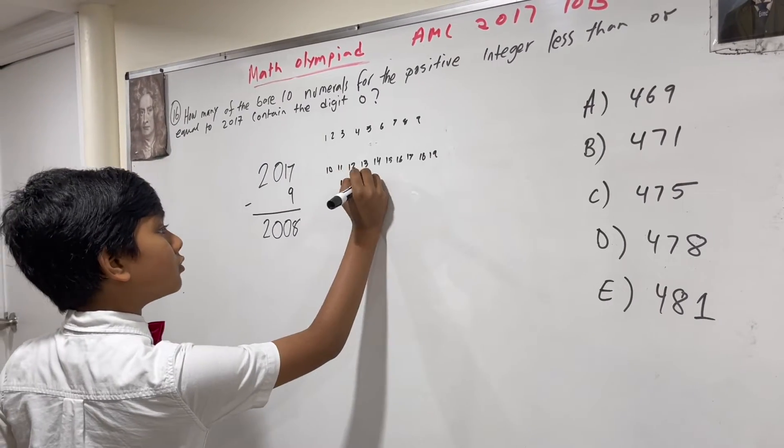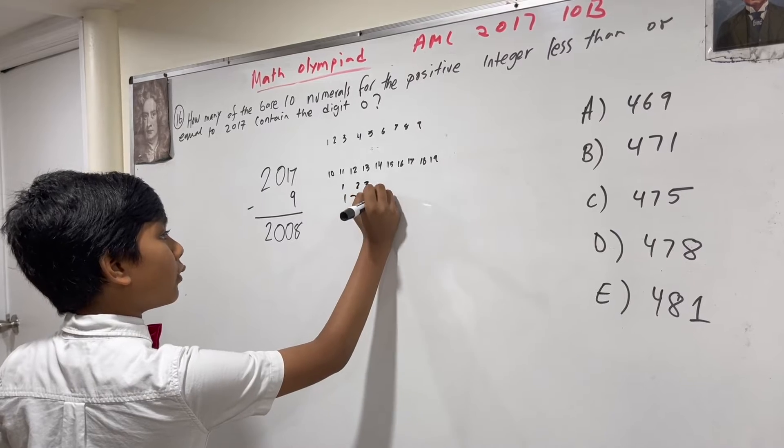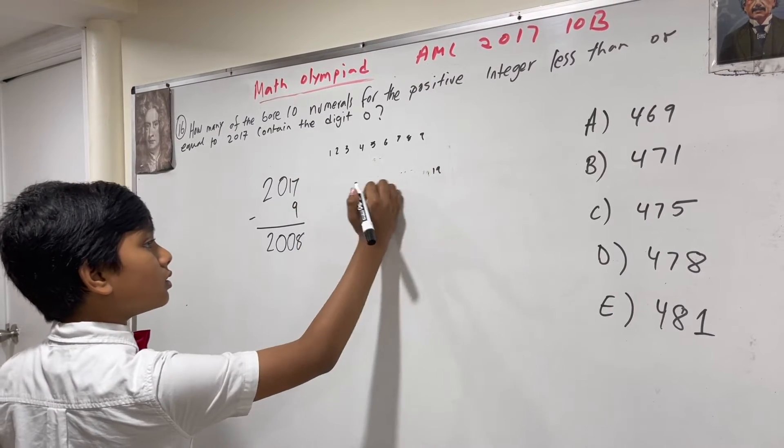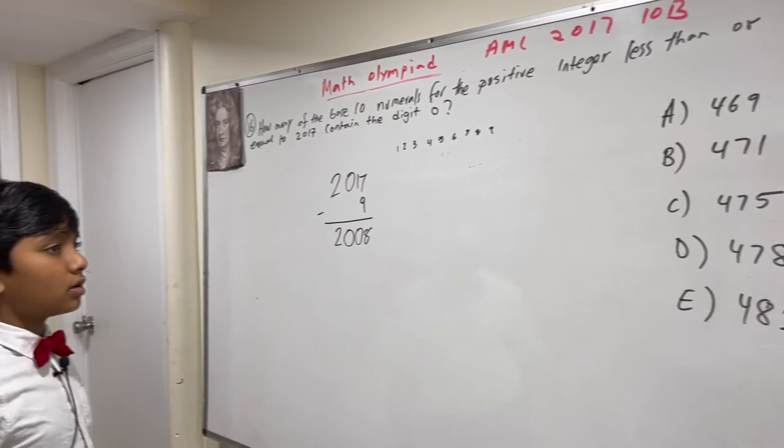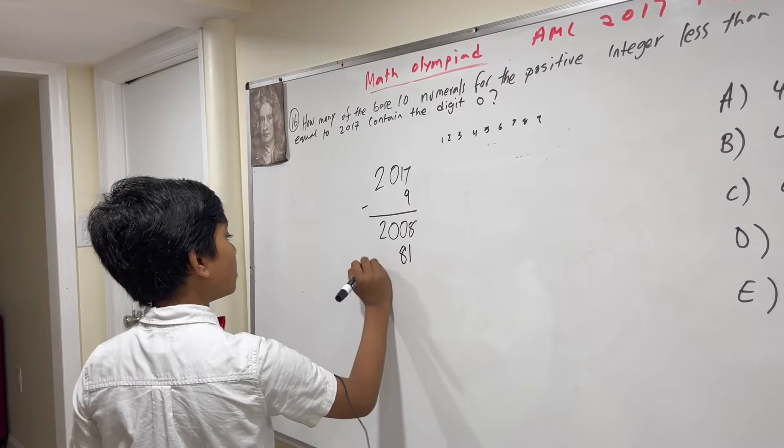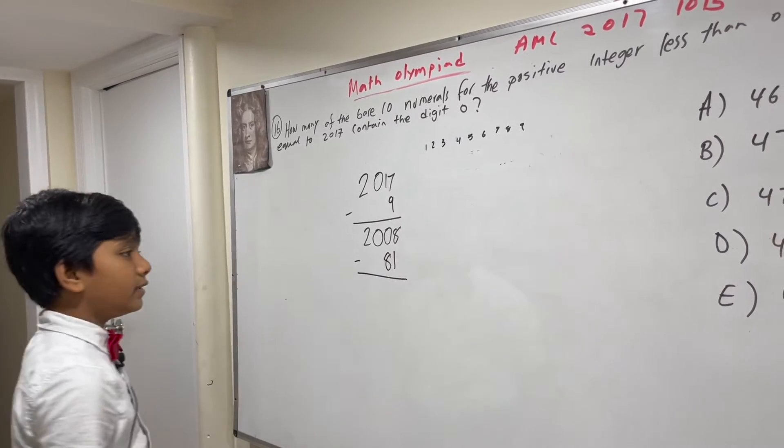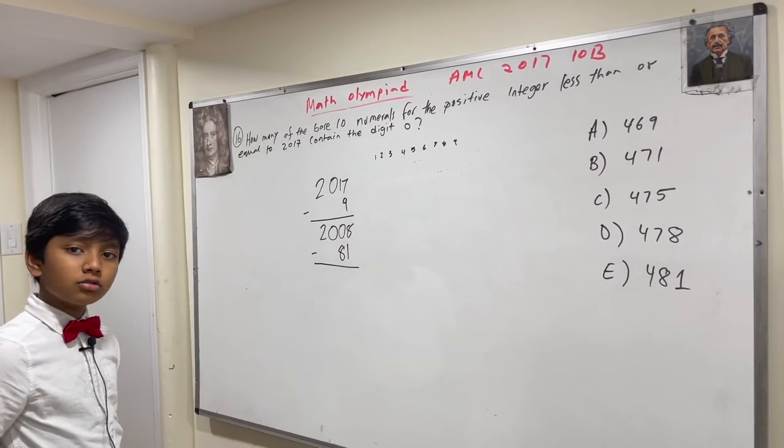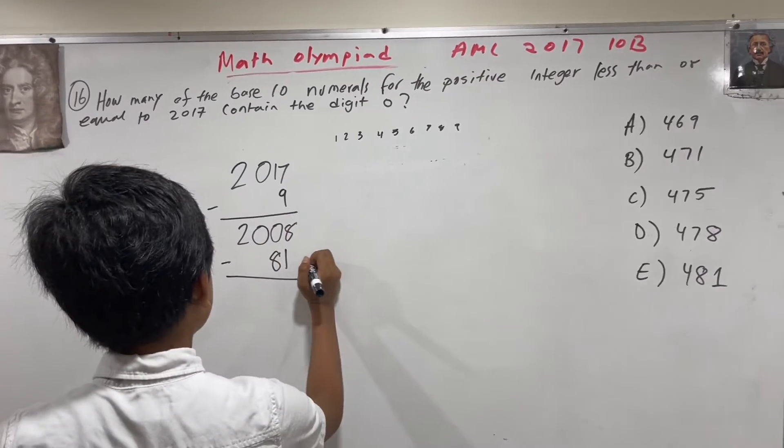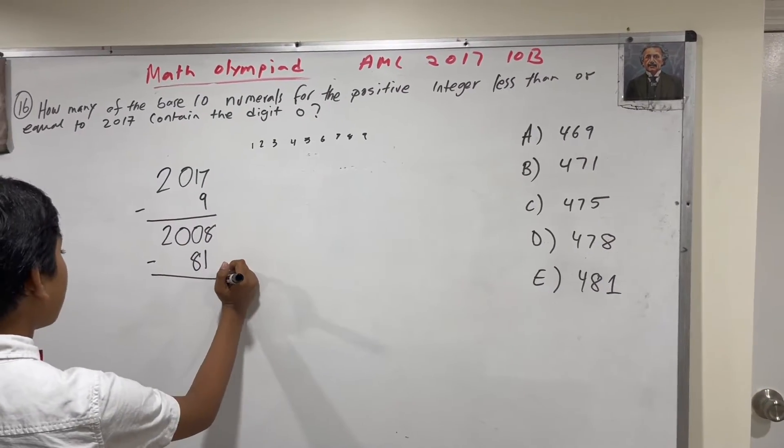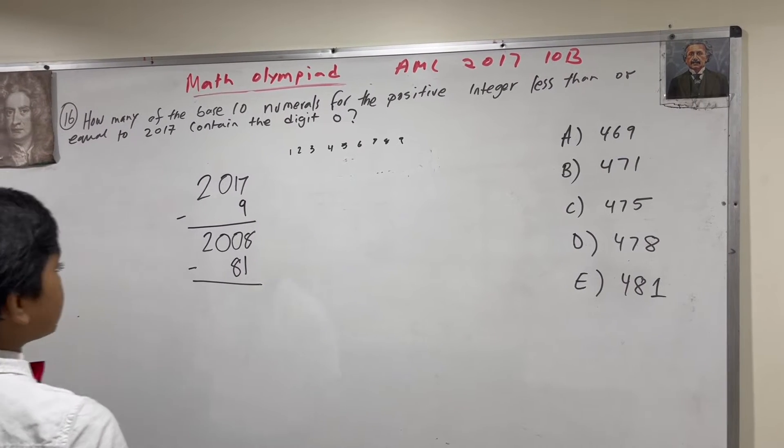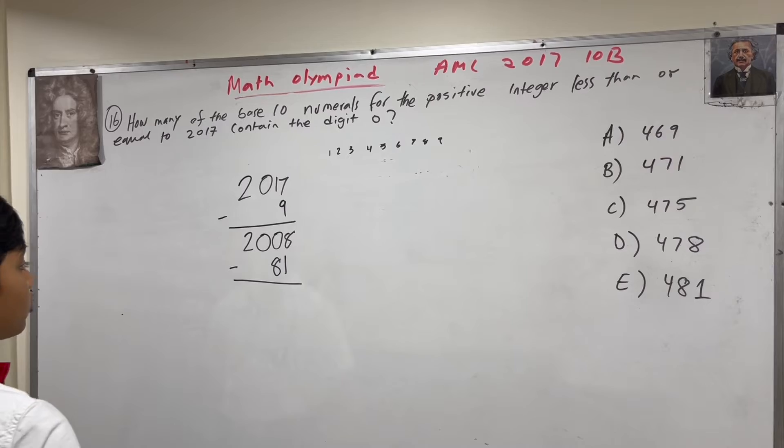So, you'll have 1, 2, 3, 1, 2, 3, 4, 5, 6, 7, 8 and 9. And in total, you will add up to 81 of these non-zero numbers. So, these two-digit numbers that don't have 0. What's 2008 minus 81? Well, it's 1927.